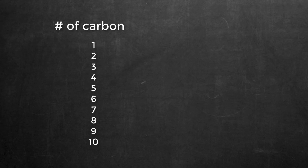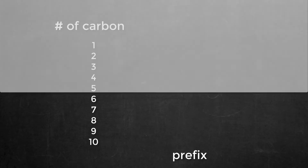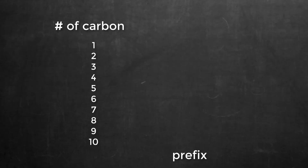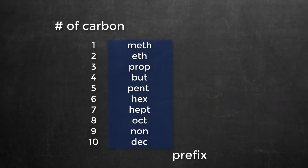If you've watched the required video on organic chemistry, you should be able to rhyme off the first ten prefixes for identifying how many carbons are in a parent chain or side group of a hydrocarbon. You should be able to identify: meth, eth, prop, but, pent, hex, hept, oct, non, dec.